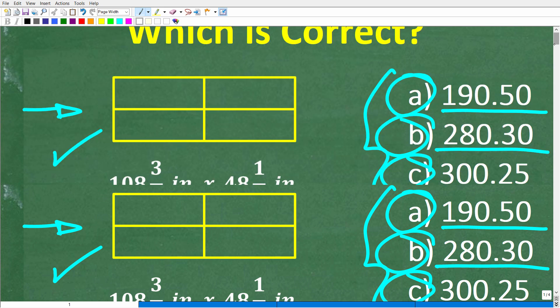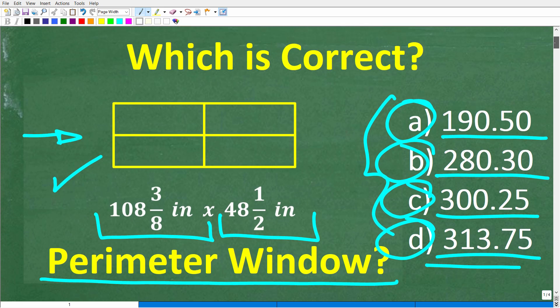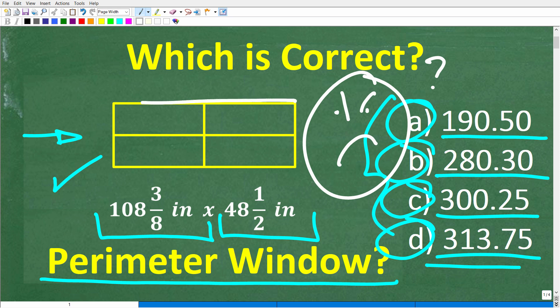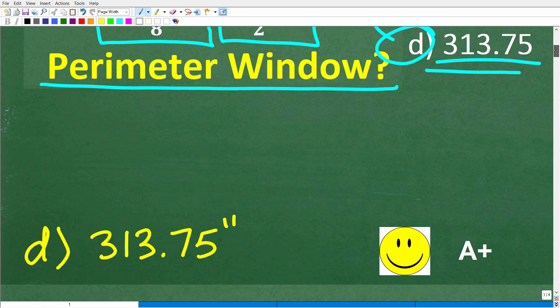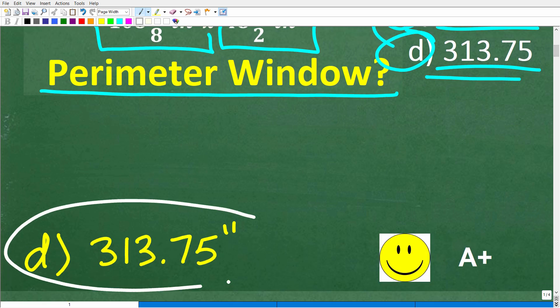Alright, so once again, we're trying to calculate the perimeter of this window. Now, some of you might be saying, hey, Mr. U2 Math Man, I forgot what the perimeter stands for. What does it mean? Well, I'll tell you that in just one second. But another thing that I need to remind you here is that we are talking about a rectangular window. So the shape of this window is a rectangle. Alright, so let's go ahead and take a look at the answer. So the correct answer here is D, which is 313.75 inches.